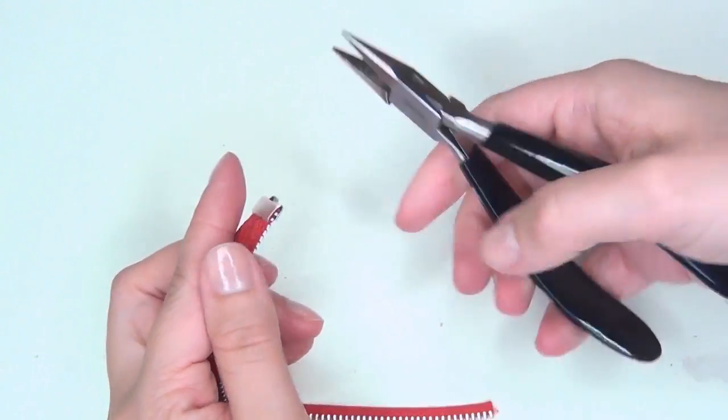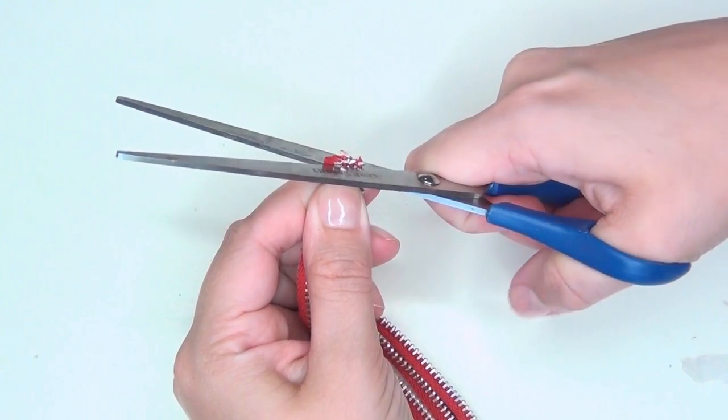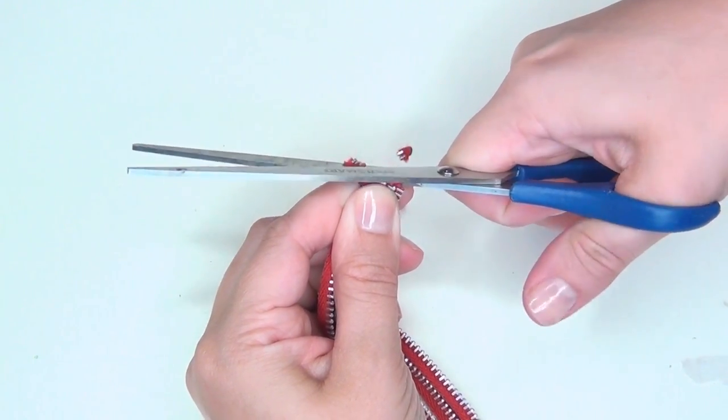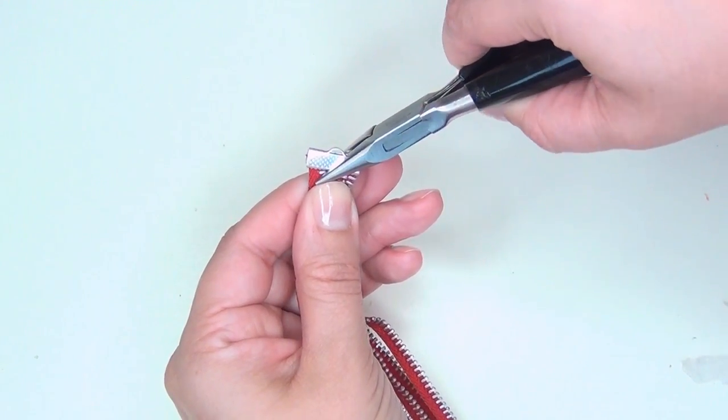Then grab the opposite end of your zipper pieces and holding them together trim them to be the same length, then cover them with a clasp and pinch that shut with your jewelry pliers as well.